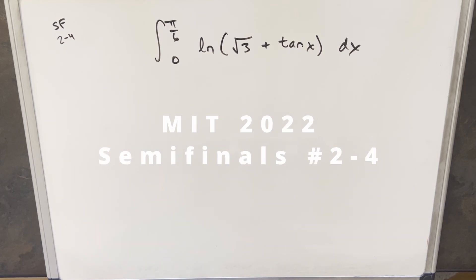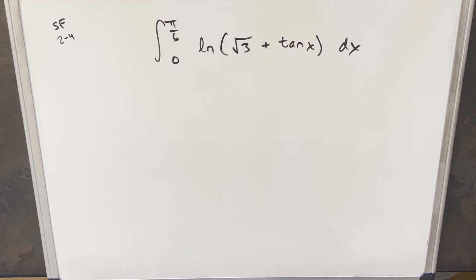We have here today another integral on the board. This one's from the MIT Integration Bee 2022 semifinals, round two, problem four. We have the integral from zero to pi over six of the natural log of the square root of three plus tan x, dx.